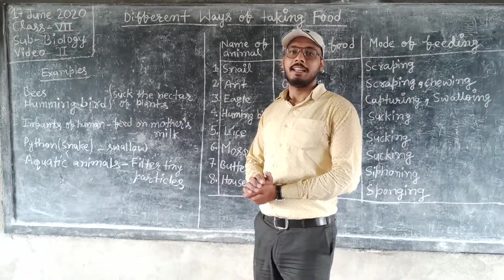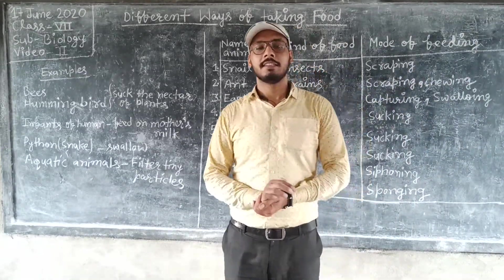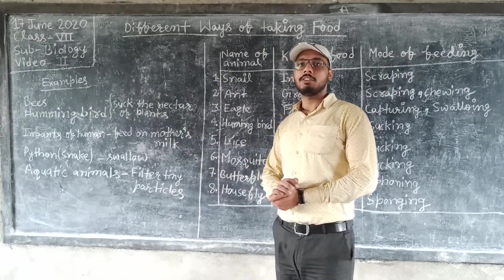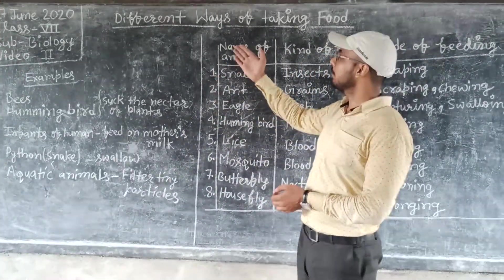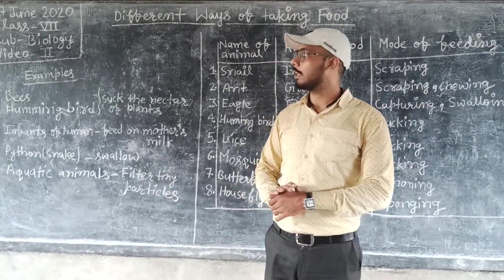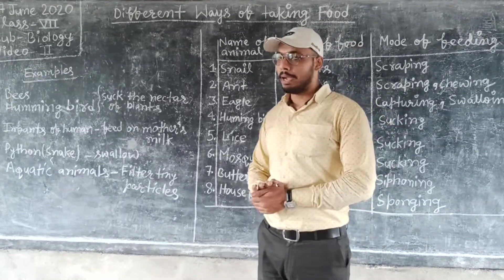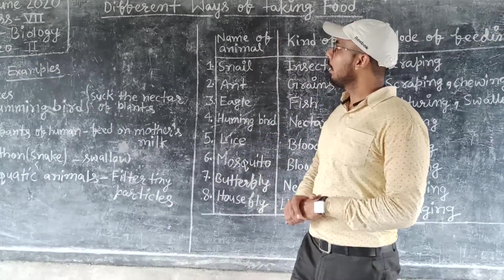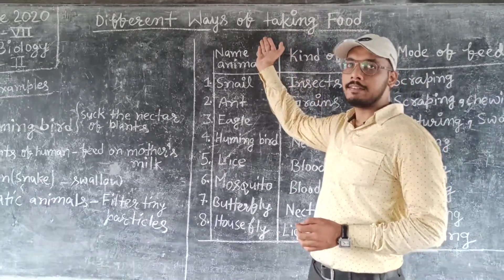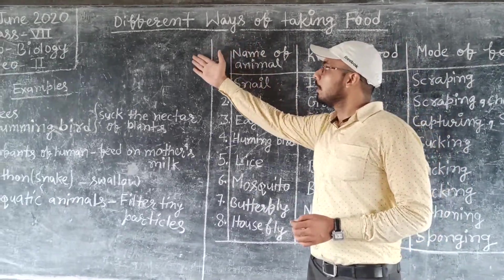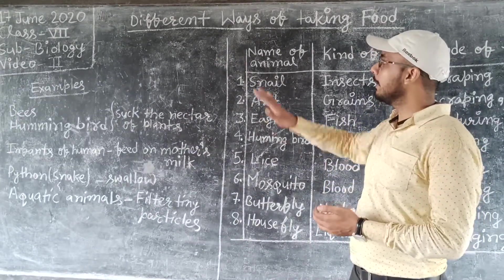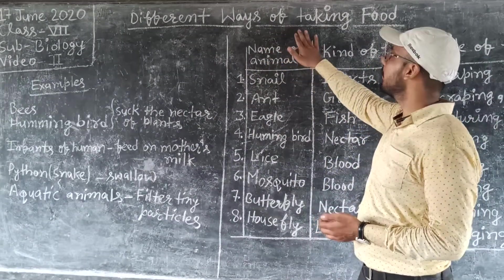Good morning everyone. Today we are going to see our second video for chapter 2 of class 7. In the subject of biology we will see different ways of taking food. The chapter is Nutrition in Animals.